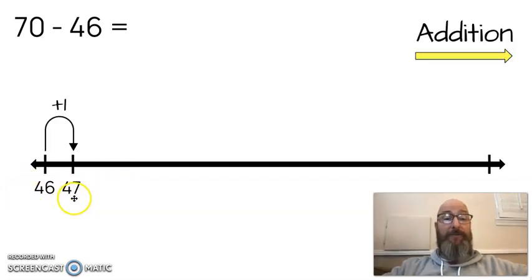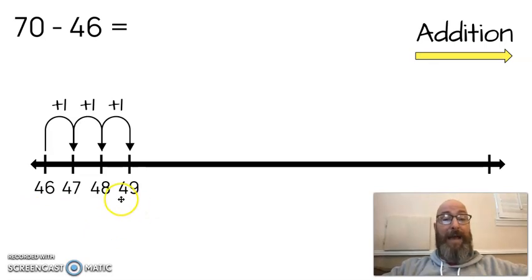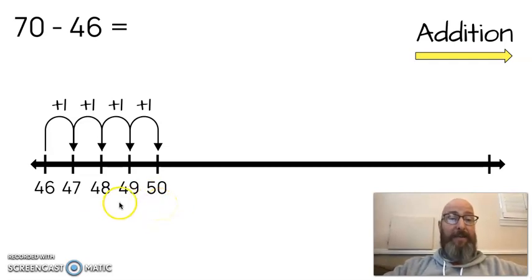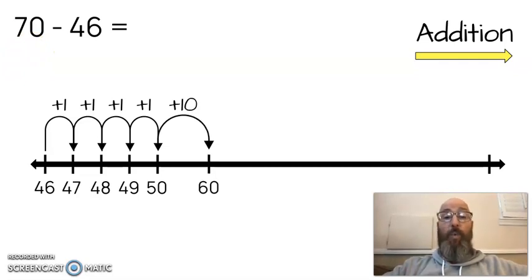1 is 47. Another 1, 48. I'm getting closer. I add 1 more. I get 49. And I add 1 more. And I get 50. So I'm up to my tens now. And I can start adding tens until I get to 70. If I add 1 ten, I get to 60.